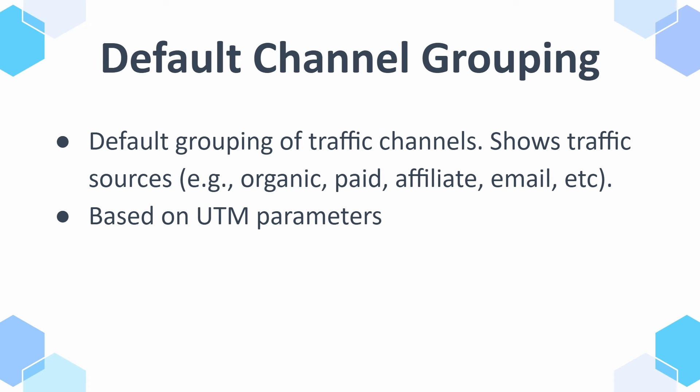Let's talk about default channel groupings because they appear everywhere in GA4. It means the default grouping of traffic channels — something that Google created. You can also create custom channel groupings, which a lot of bigger companies do, because sometimes the way GA4 groups certain sources isn't how your company treats them. Examples of default channel groupings include organic, paid, affiliate, and email.